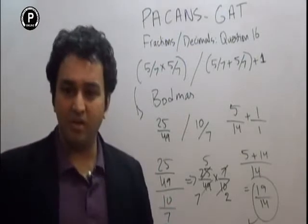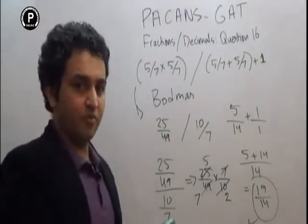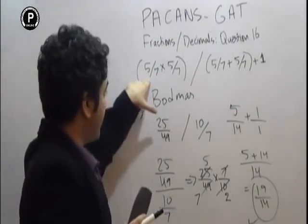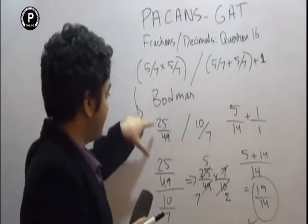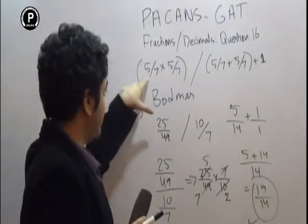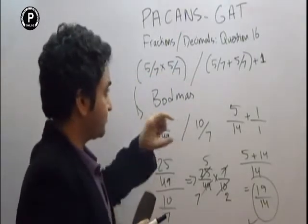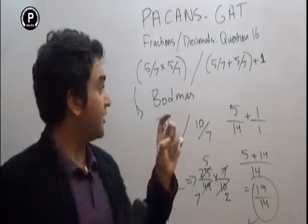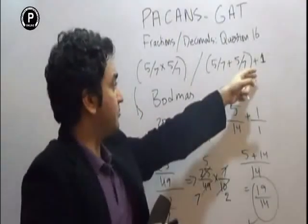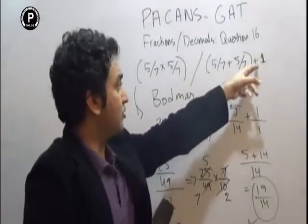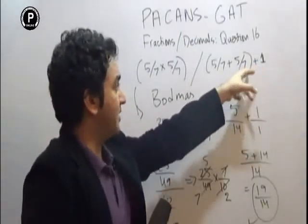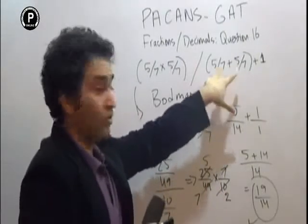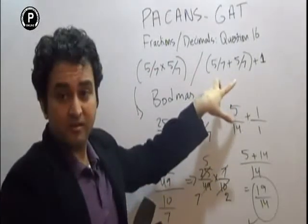First I just solved it and now I am going to explain it to you one by one. So 5 over 7 multiplied by 5 over 7 is going to be 25 over 49. Now the mistake people make is they will add it, but first we have to solve what is in the brackets.